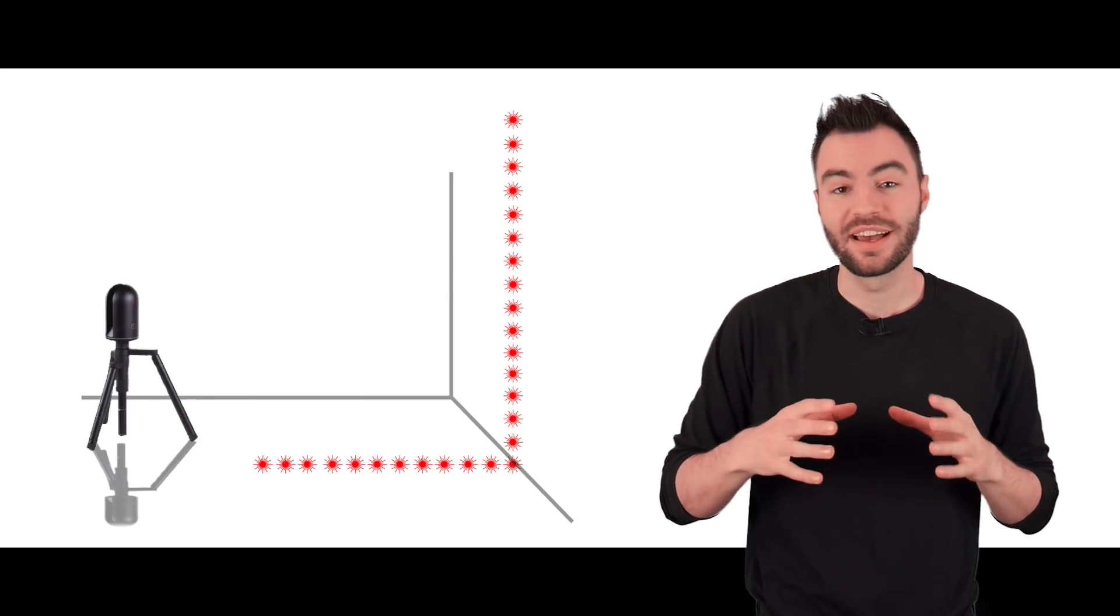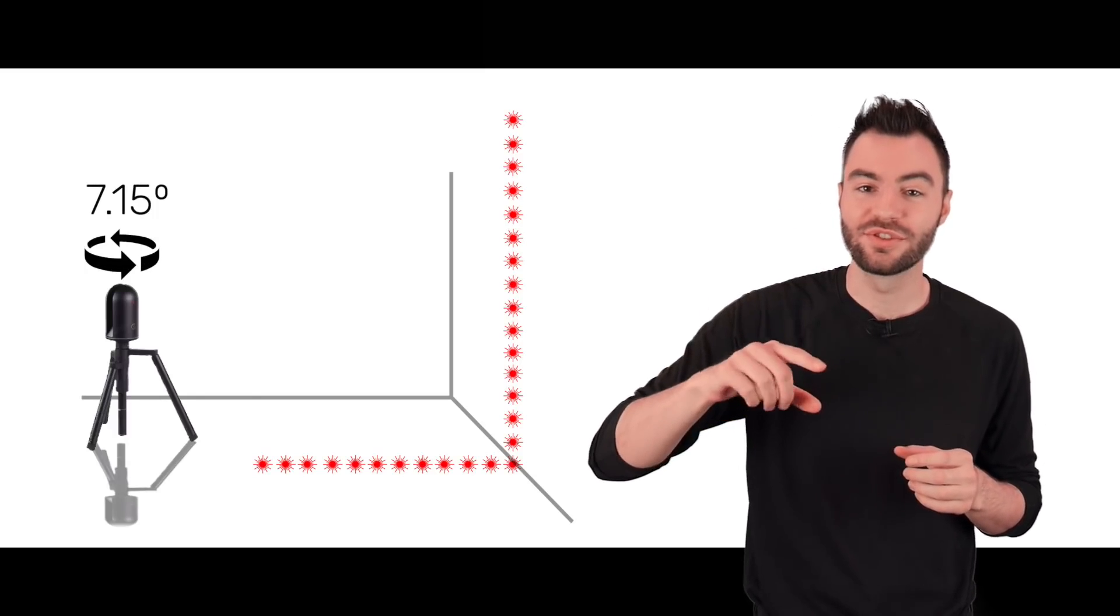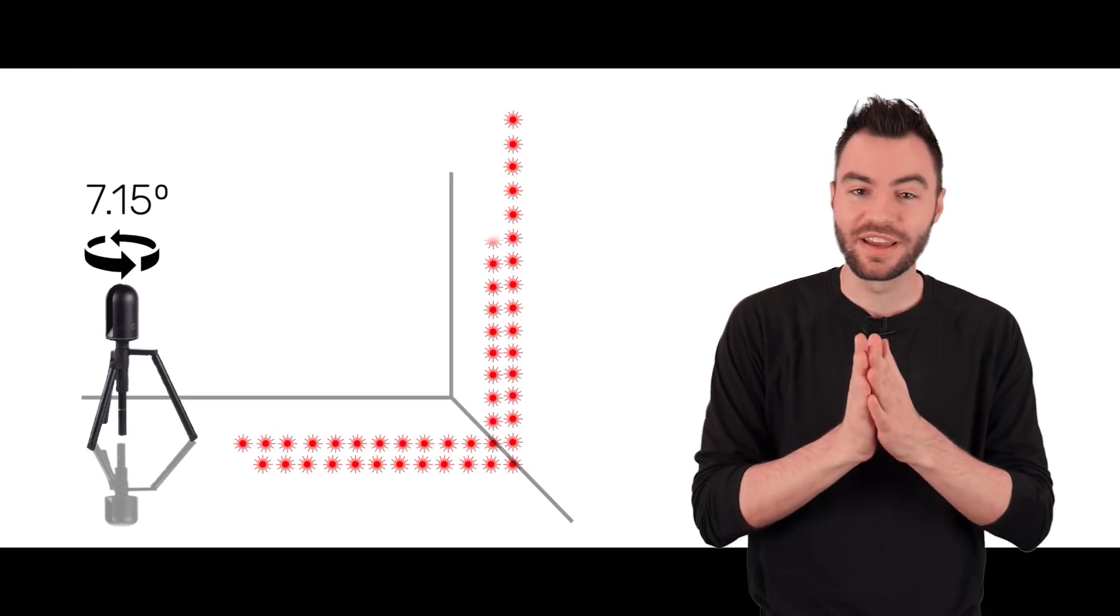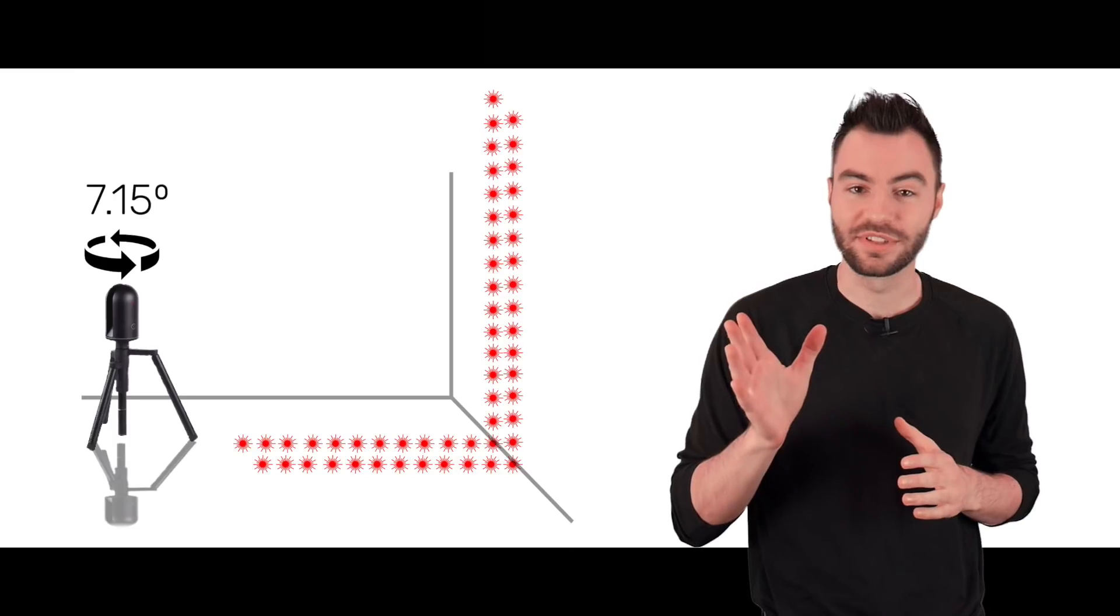During this whole process the BLK360 itself is spinning. So by the time the mirror gets all the way around to where it started, the BLK has spun and now it's measuring a line of points right next to the first line of points.